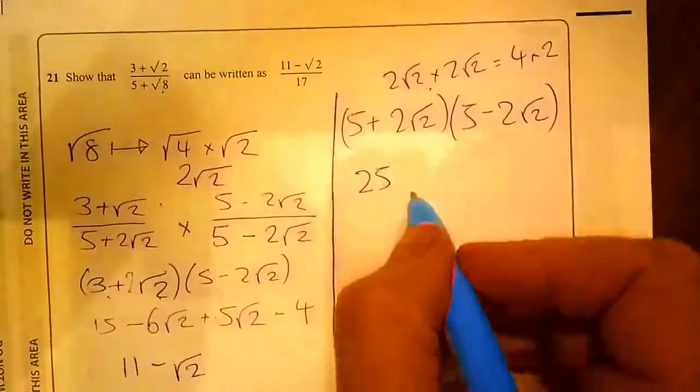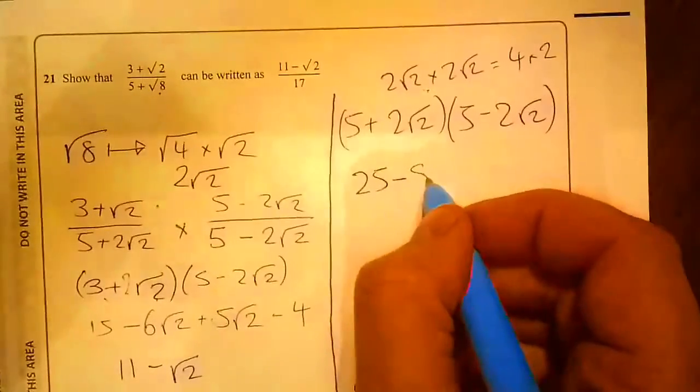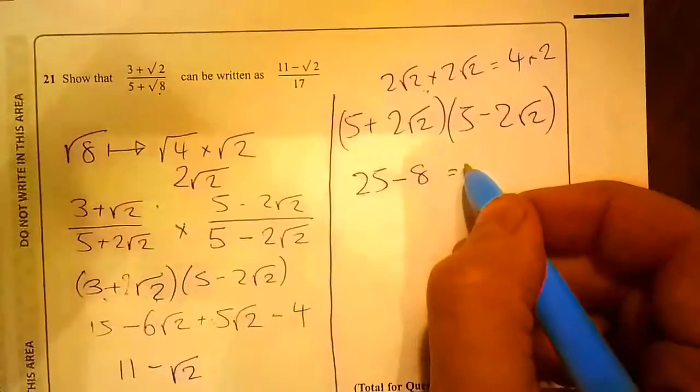So 2 × 4 is 8. It's always going to be minus, so it's minus 8. 25 - 8 = 17.